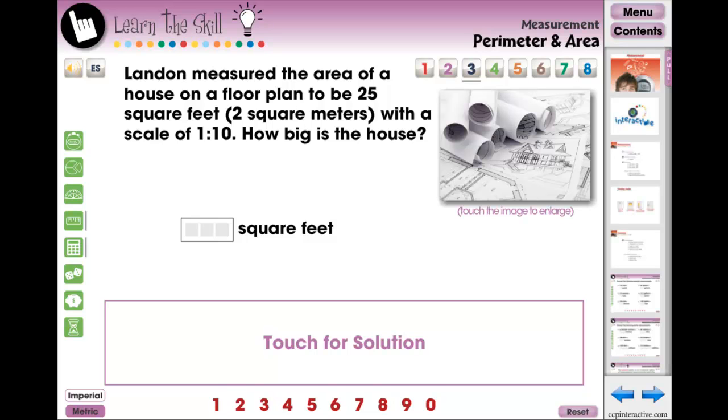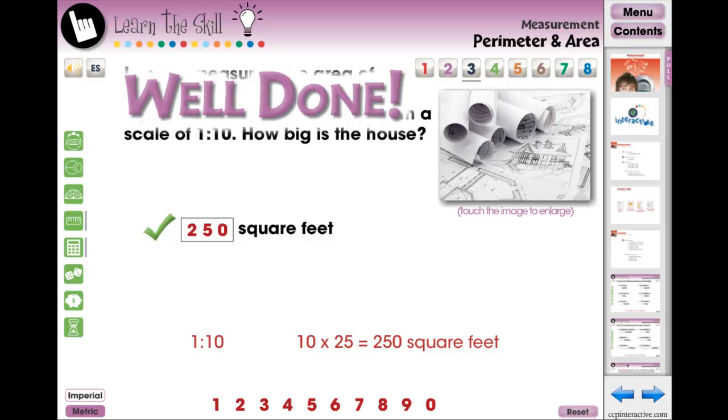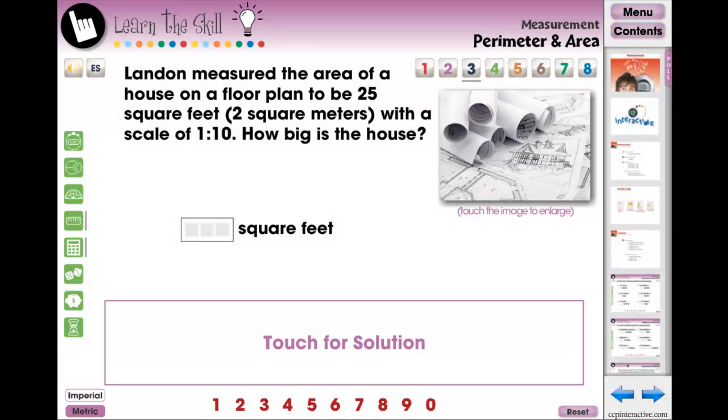The Learn the Skills section contains eight screen pages of real-world word problem activities. Students can touch for solution to see how the answer was reached. Also, where required, we have included an imperial metric conversion to allow students to choose whether to answer the question in imperial or metric or both.